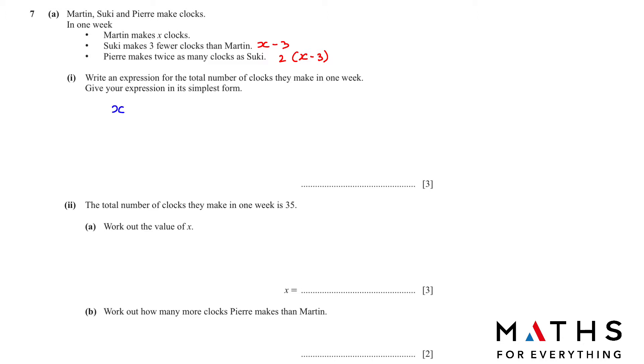We have to write an expression for the total number of clocks they made in one week. We just write down X for Martin, Suki which is X minus 3, Pierre which is 2 bracket X minus 3. We can expand the bracket: 2X minus 6. Add the like terms together. 1 plus 1 plus 2 will be 4X. Negative 3 and negative 6 gives us negative 9. So the answer is 4X minus 9.